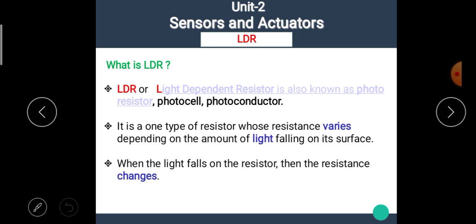The question arises here, what is LDR? The LDR or light dependent resistor is also known as a photo resistor, photocell or photo conductor. That means it has various names: LDR, light dependent resistor, or photo resistor. It is one type of resistor whose resistance varies depending upon the amount of light falling on its surface. The working of LDR is very simple - the LDR has a specific amount of resistance and this resistance depends upon the light falling on the LDR.